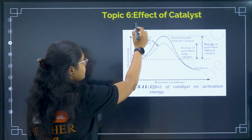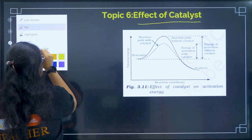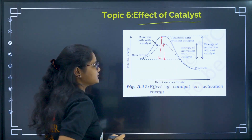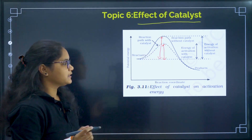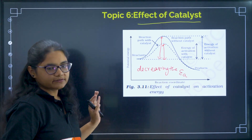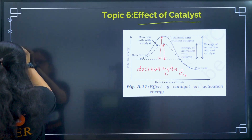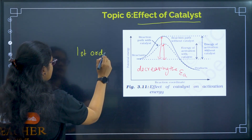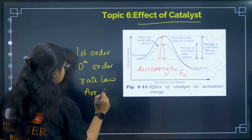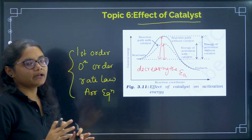The third factor is effect of catalyst. One question can generally be expected from this topic. Catalyst reduces the activation energy — when there is no catalyst, activation energy is higher; when catalyst is added, activation energy decreases. The question generally asked is: how does a catalyst increase the rate of reaction? The answer is by decreasing the activation energy. You need not study anything else from this topic.